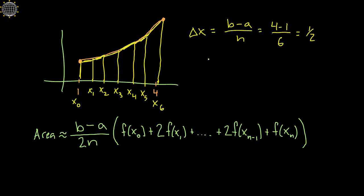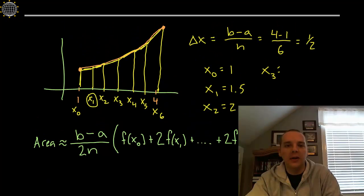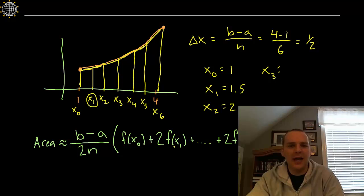To quickly jot these down: x sub 0 is 1, x sub 1 is 1.5, x sub 2 is 2, then x sub 3, 4, 5, and 6. You would continually go up in increments of a half, and x sub 6 would be 4, your final x value. Basically we just have to plug these in and this should give us our area. If you're asking how does that give you the area of a trapezoid, that's not something we're covering in this video. If you watched the previous video, that's where we explain where this formula comes from. We're just using it right now.